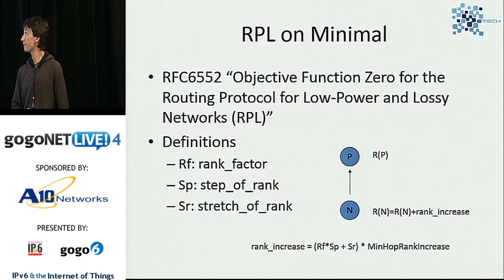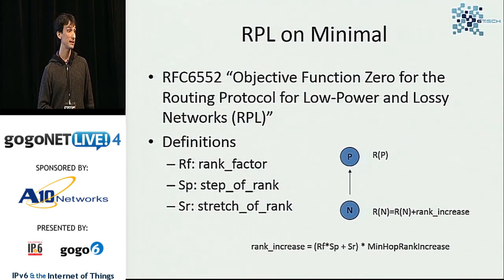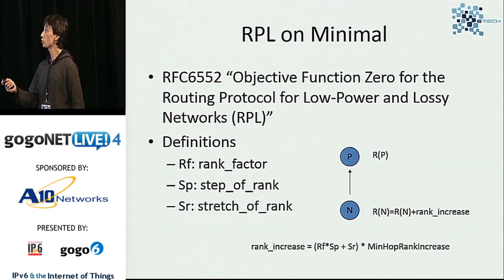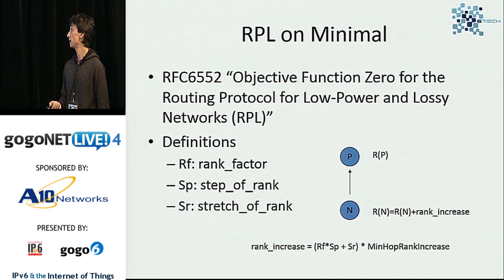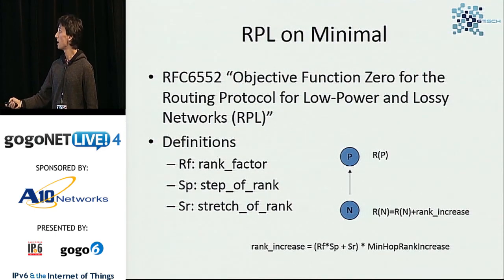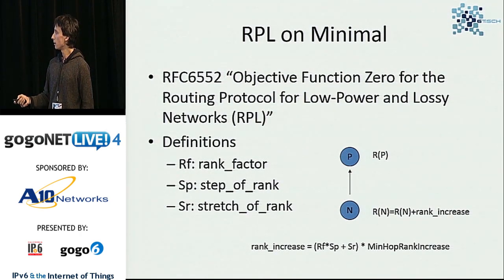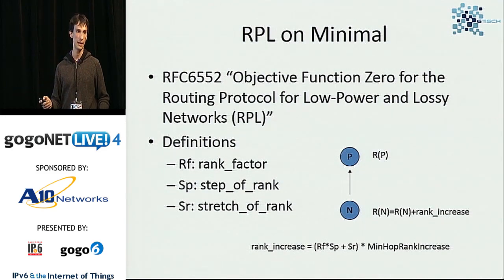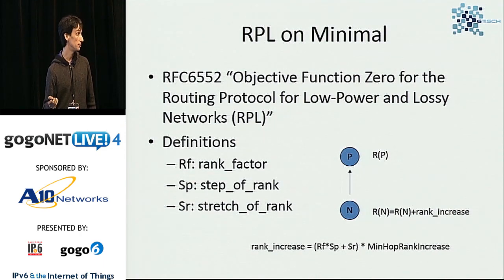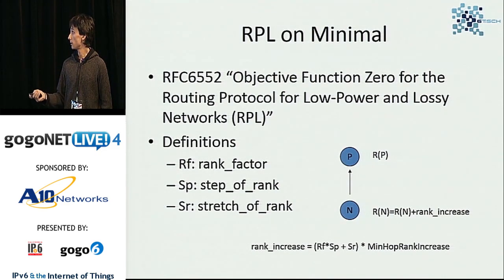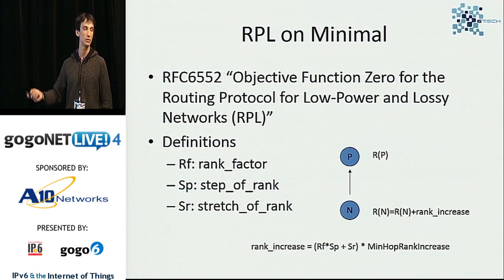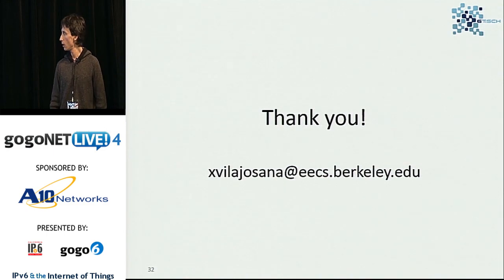The final element is defining how RPL works on this network. Our approach is to use RFC 6552, which is Objective Function Zero, defining how the rank of nodes is computed. We propose using Expected Transmissions (ETX) — the inverse of the Packet Delivery Ratio — as the rank factor. This is the simplest approach to establishing a routing topology in a standard way.